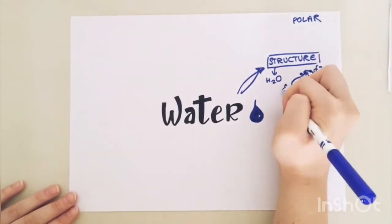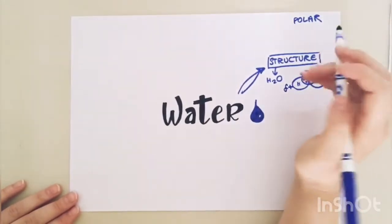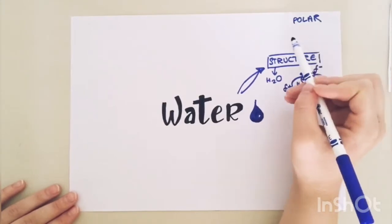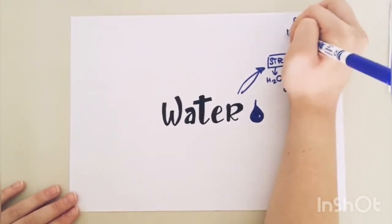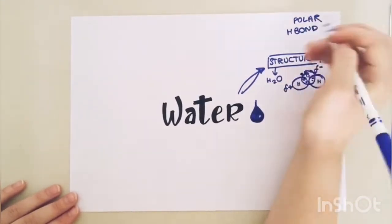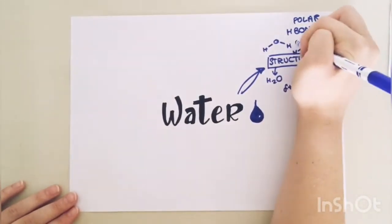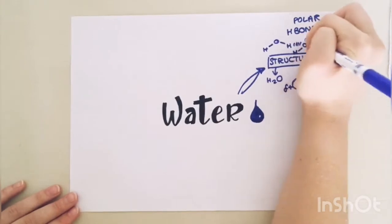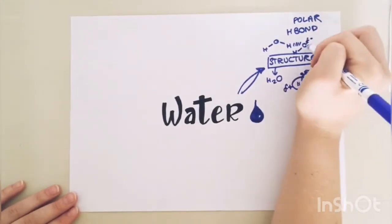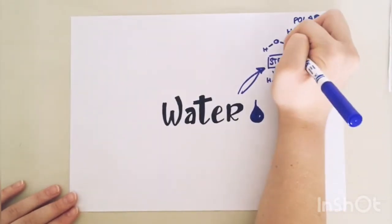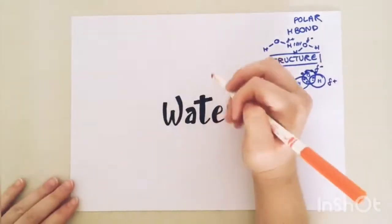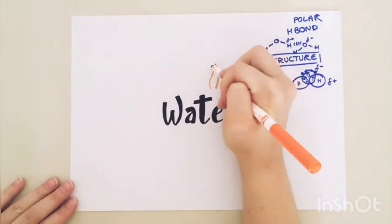This key property of water means that it can hydrogen bond. So if we have... you've got a hydrogen bond between a delta negative oxygen and a delta positive hydrogen.